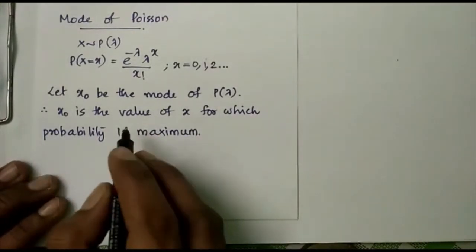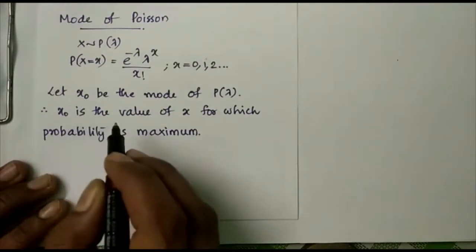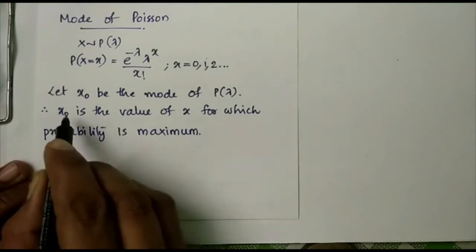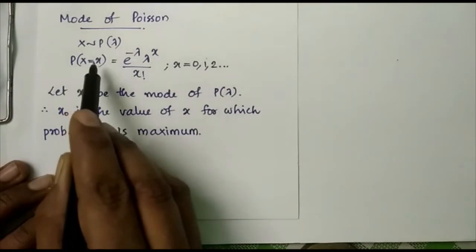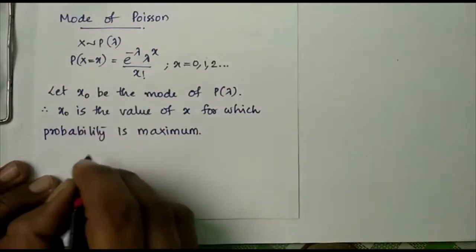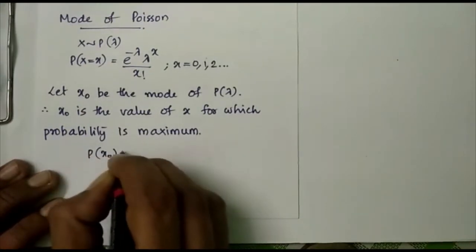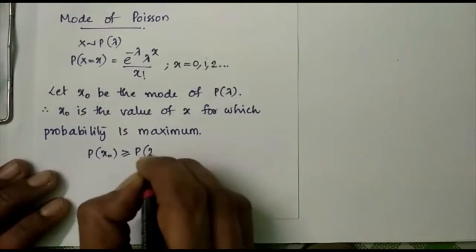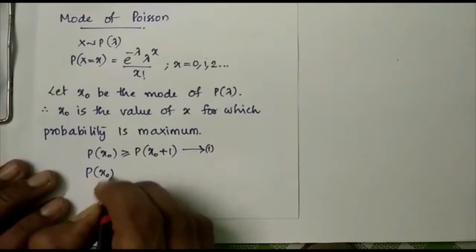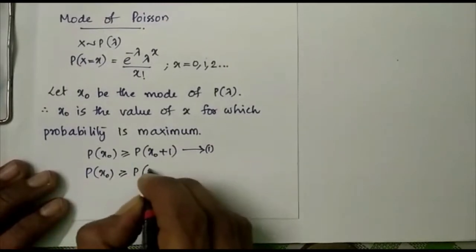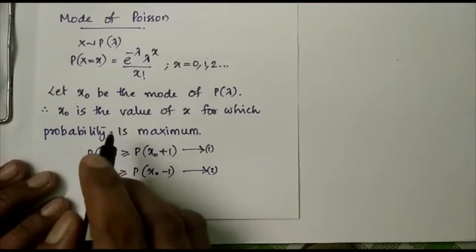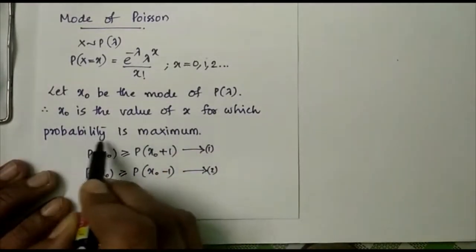For x0 to be the mode, taking the left-side and right-side values of x0, we need: P(x0) ≥ P(x0 + 1) — equation 1, and P(x0) ≥ P(x0 − 1) — equation 2, because the mode is defined as the value of x for which the probability is maximum.